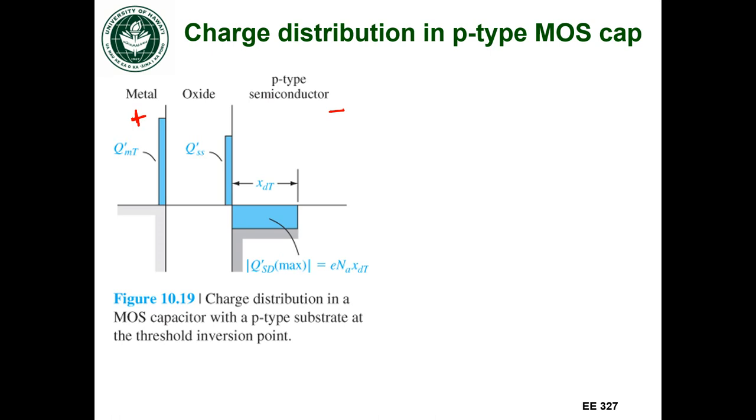So the amount of charge should balance. That is, the amount of charge in the metal plus the amount of charge in the oxide should be equal to the magnitude of the charge in the depletion region. And the amount of charge in the depletion region is going to be equal to the electronic charge times the doping concentration times the width of the depletion region.